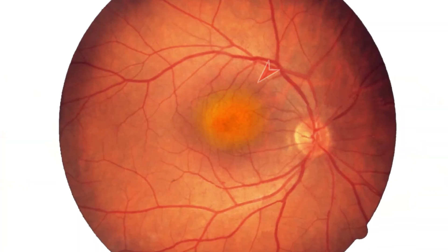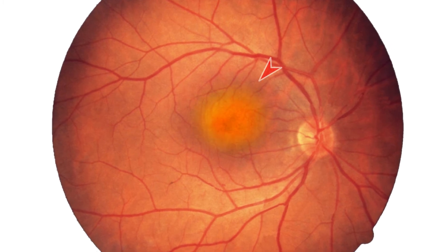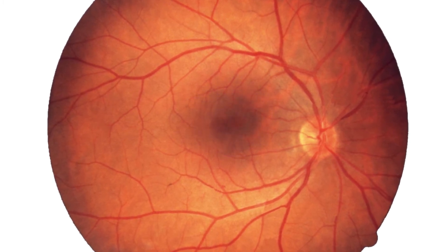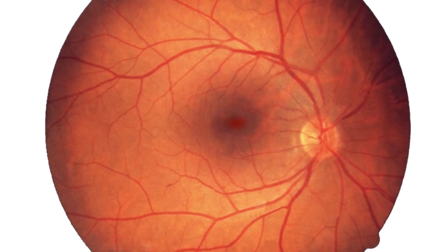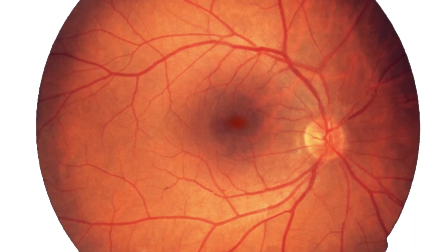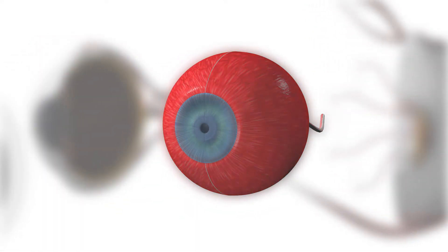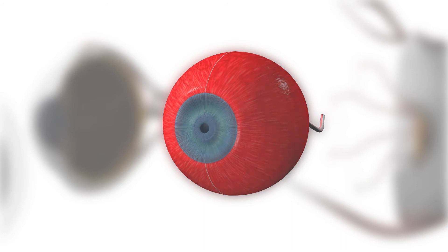Macula: the area of the retina at the posterior pole of the eye responsible for fine central vision. The oval depression at the centre of the macula is called the fovea. Choroid: the vascular pigmented tissue layer between the sclera and the retina, which provides the blood supply for the outer retinal layers.